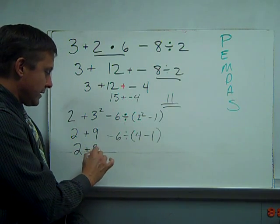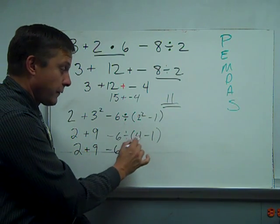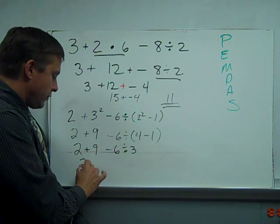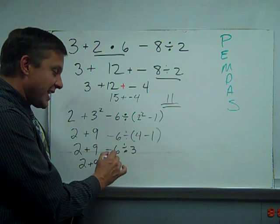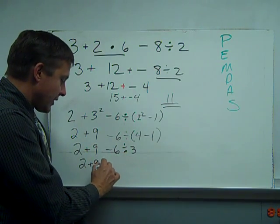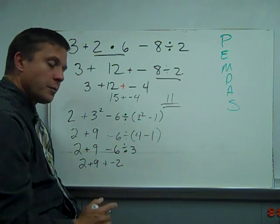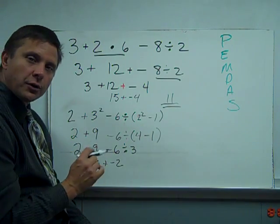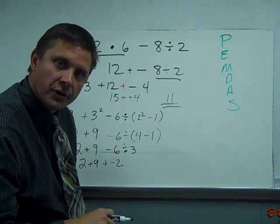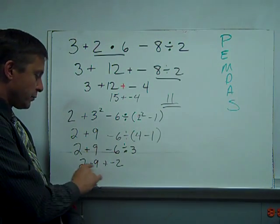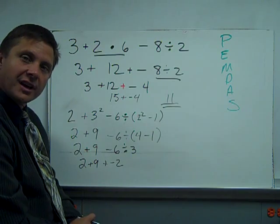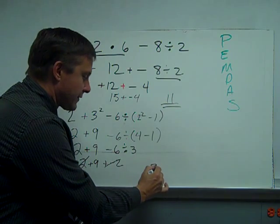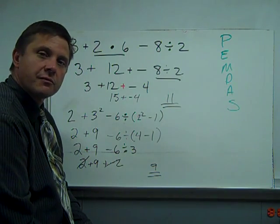So again, I'll write 2 plus 9 minus 6 divided by 4 minus 1 is 3. Now I'm going to do this division. 2 plus 9 plus negative 6 divided by 3 is negative 2. And this is where by making addition can help us. Because I can add any order. 1 plus 3 is 4. 3 plus 1 is 4. So I look at this problem, I say 2 plus negative 2. Well 2 plus negative 2 is 0. And I am left with the final answer of 9.